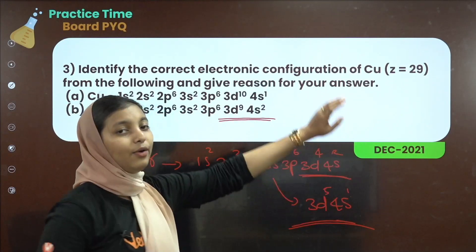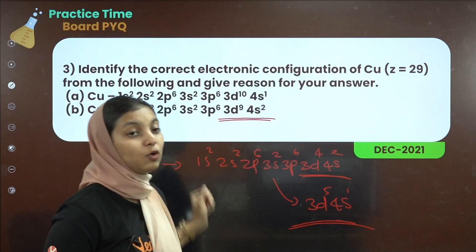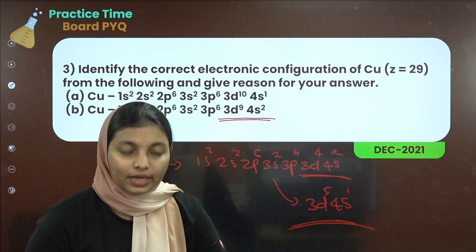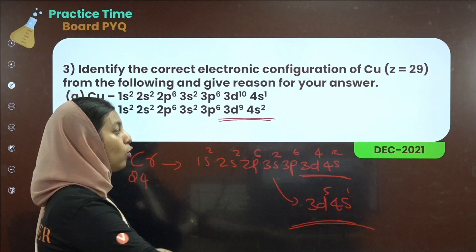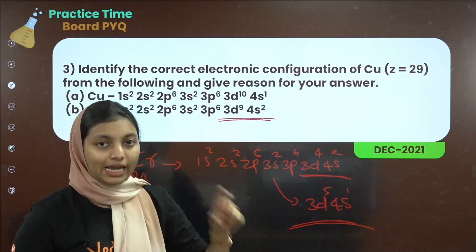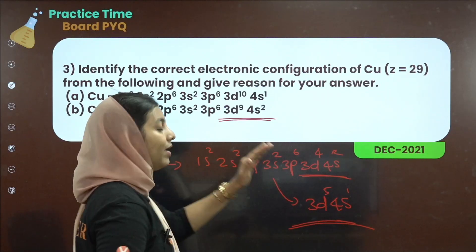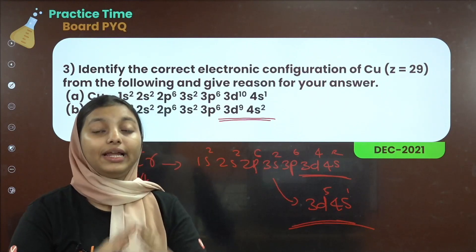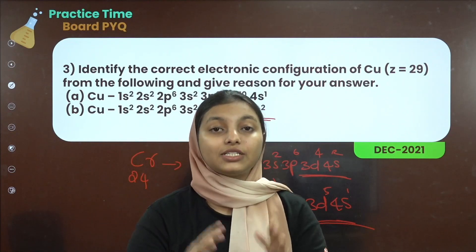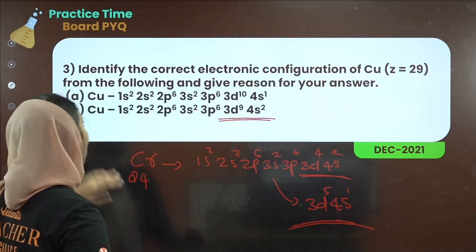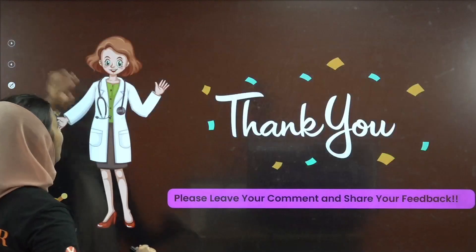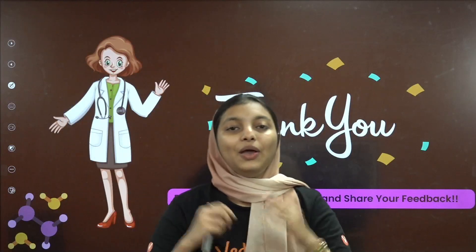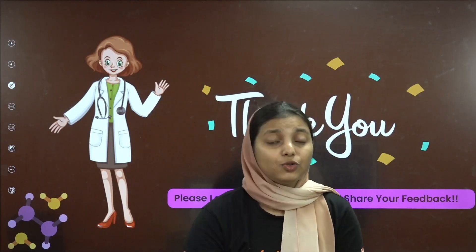That means copper and chromium both show exceptional behaviour due to fully filled and half-filled d configurations providing extra stability. We have completed the PYQs on the structure of atoms. All the best. Bye!